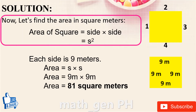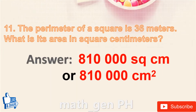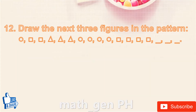Now let's find the area. Area of a square equals side times side, or s squared. Each side is 9 meters, so area equals 9 times 9 equals 81 square meters. Converting to square centimeters: 1 meter equals 100 centimeters, so 1 square meter equals 10,000 square centimeters. 81 square meters equals 810,000 square centimeters. Answer: 810,000 square centimeters.